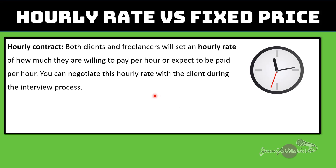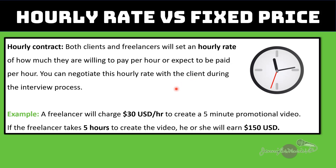With an hourly contract, both the client and the freelancer will set an hourly rate — how much they are willing to pay per hour or expect to be paid per hour. You can negotiate this hourly rate with the client during the interview process. For example, let's say a freelancer will charge $30 US dollars an hour to create a five-minute promotional video. If the freelancer takes five hours to create the video, they will earn $150 — of course, before Upwork takes their commission.